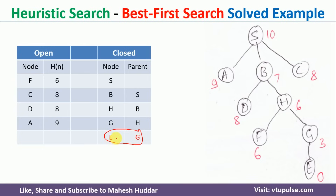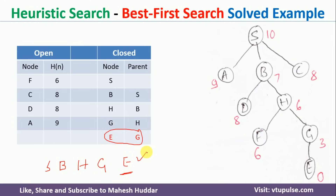As stated in the algorithm, once we reach the goal state we need to backtrack to find the path. To reach E, its parent is G. Before G its parent is H. The parent of H is B, and the parent of B is S. So to reach goal state E, we go from S to B, B to H, H to G, and finally G to E. This is the final path in this particular case.